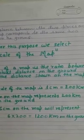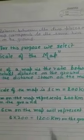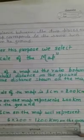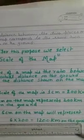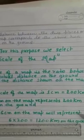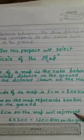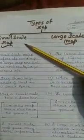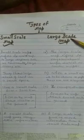So students, scale is very important. If you know the scale, you will be able to convert the distance between any two places on a map into the actual distance on the ground. Let's discuss about the two types of a map. One is a small scale map and another one is the large scale map. First of all, we will discuss regarding the small scale map.